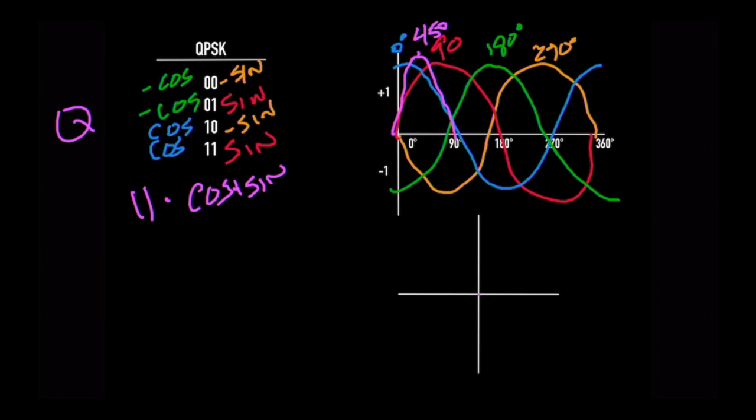Thus if we plotted it, it would be right here, 45 degrees down. This represents a 1, 1. There's another one in this quadrant, and this quadrant, and this quadrant. They represent the four different bits.